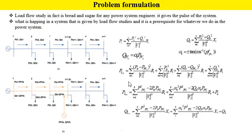Here is the problem formulation. Load flow is fundamental for any power system—it gives the operational state of the system and is a prerequisite for power system analysis. These two diagrams represent a single line diagram of a radial distribution system without DG and with DG applied. Active and reactive power loss is calculated using corresponding formulas, and when DG is applied, the power loss formula changes accordingly.